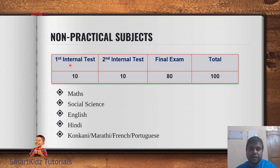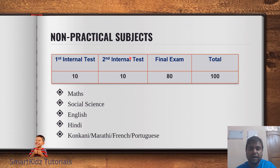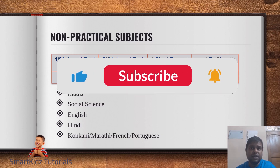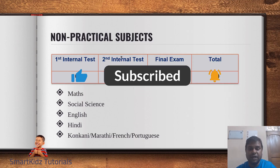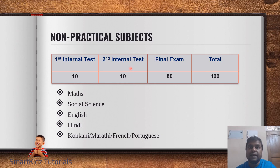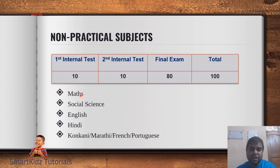For non-practical subjects, the first internal test is out of 20 and the second is out of 20, but each is halved — so they each count as 10 marks. For example, if you get 18 out of 20 in your first internal test, 9 marks are considered (9 out of 10). If you get 16 out of 20 in the second, that becomes 8 out of 10. So 9 plus 8 gives 17 out of 20, which is then added to the 80-mark final exam for a total of 100. This applies to maths, social science, English, Hindi, and your third language.